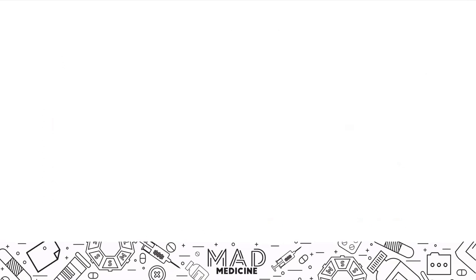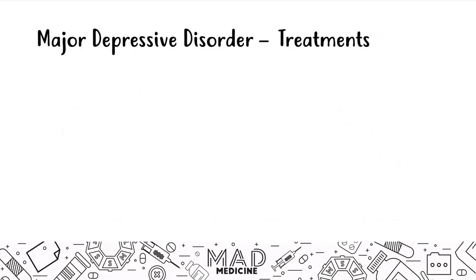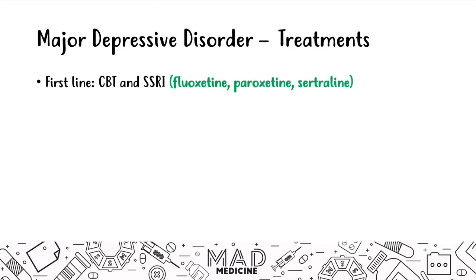The treatment for major depressive disorder is pretty straightforward. First-line treatment is cognitive behavioral therapy (CBT) and a class of drugs called selective serotonin reuptake inhibitors, or SSRIs. In major depressive disorder, you want more serotonin within the synaptic cleft. The three SSRIs to commit to memory are fluoxetine, paroxetine, and sertraline — these are the first-line drugs used to treat MDD along with CBT.